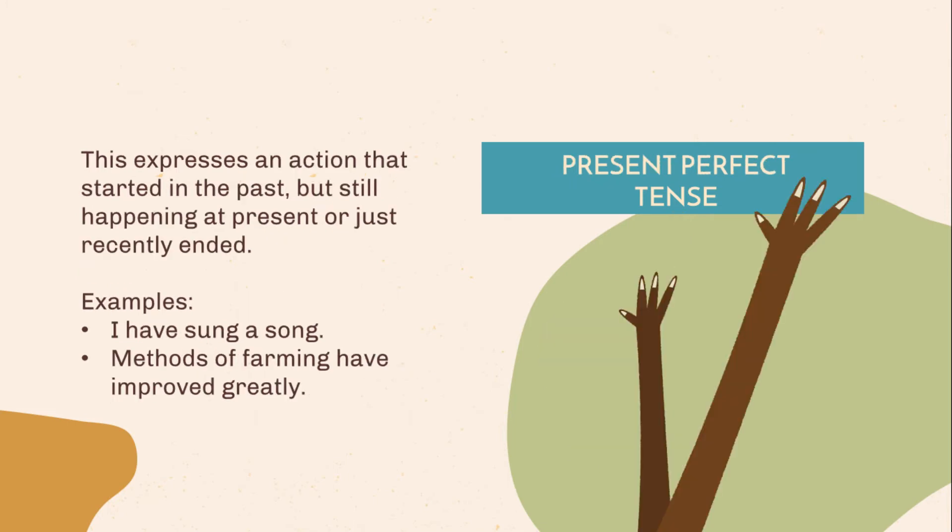Present perfect tense. This expresses an action that started in the past but is still happening at present or just recently ended. Examples: I have sung a song. Methods of farming have improved greatly.